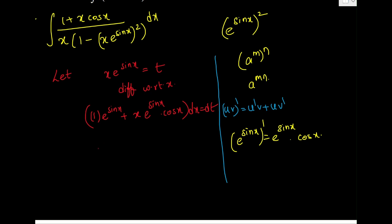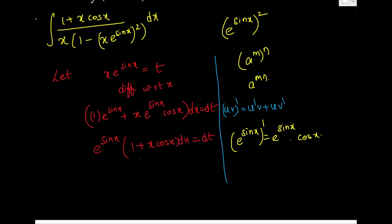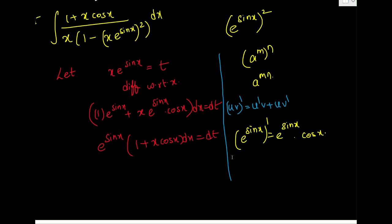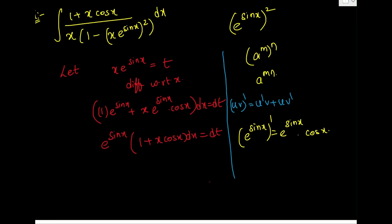Taking e^(sin x) common, I get (1 + x·cos x)·dx = dt/e^(sin x). If you see the numerator of the original integral, you will find the same expression. So we can rearrange: (1 + x·cos x)·dx = dt / e^(sin x).